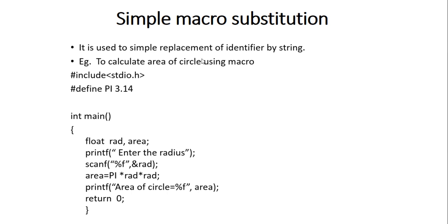So it is known as simple replacement of identifier by string. The identifier is PI, and we are replacing this with 3.14. Here we can calculate the area and we can print this area.